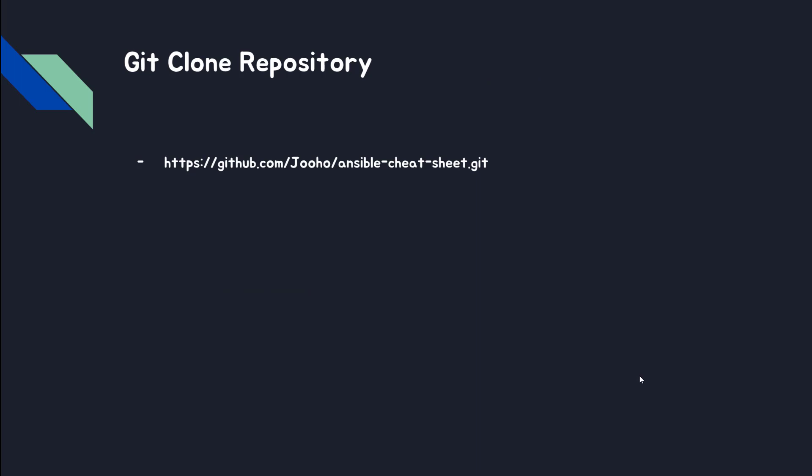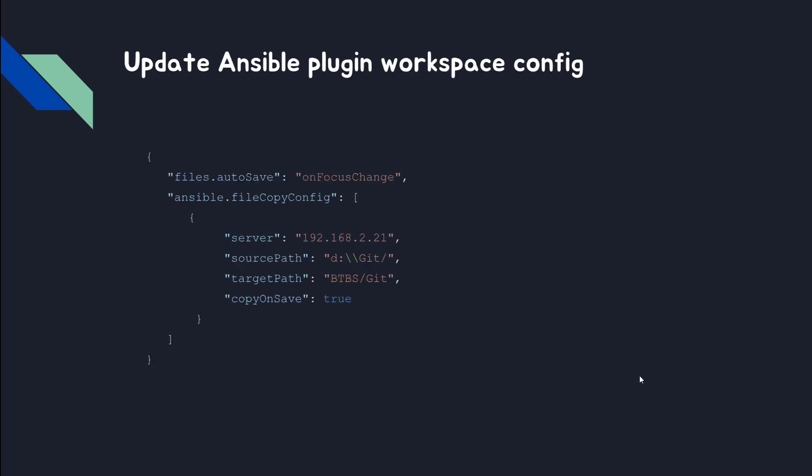Git repository — that is my own repository and it already has many sample playbooks. I will add my new ansible playbook into that repository, so I need to git clone that repository. Update ansible plugin workspace config.